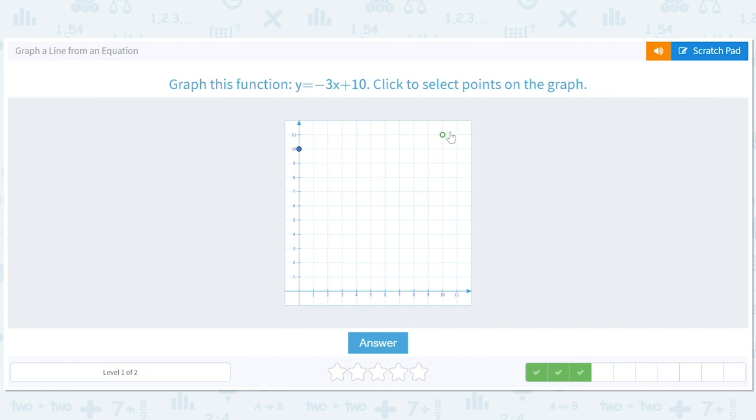So I go here, and I go one, two, three. And that gives me a negative slope.